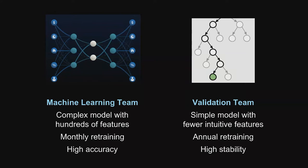Our machine learning team came in and built a super complex model using a multi-layered neural network that took in tons of data. It was able to do real-time training, but we decided it's going to be updated once per month based on additional feedback from customers, and it had very high accuracy on the likelihood that somebody would repay.